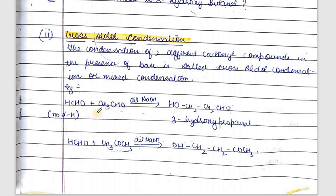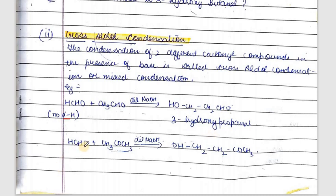An example is formaldehyde and acetaldehyde. Formaldehyde has no alpha hydrogen, so it cannot undergo simple aldol condensation, but it can undergo cross aldol condensation. It combines with a second molecule that has alpha hydrogen in the presence of dilute alkali to give the product. In this, formaldehyde is converted to an alcohol while the other compound remains as an aldehyde. Similarly, formaldehyde can combine with acetone in the presence of alkali, and again the carbonyl group of formaldehyde changes to alcohol while the acetone portion remains as CH₂COCH₃.